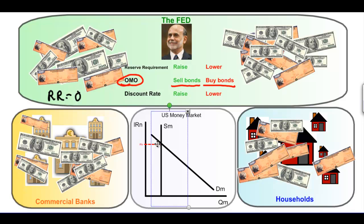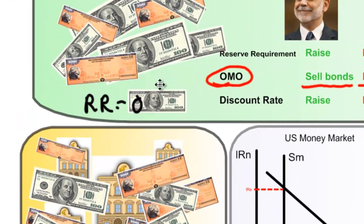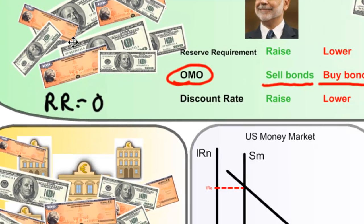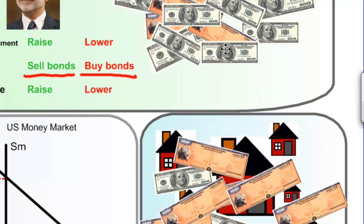To summarize open market operations: if the Federal Reserve wishes to increase the money supply, they will buy bonds — bonds go to the Fed, money goes to commercial banks and households, and the supply of money increases, causing the interest rate to fall. On the other hand, if the Fed wishes to decrease the supply of money, they can sell bonds — money flows back to the Fed from commercial banks and households, there is less money in circulation, interest rates rise, and there is a decrease in consumption and investment.